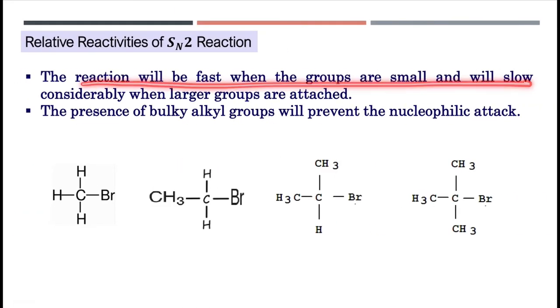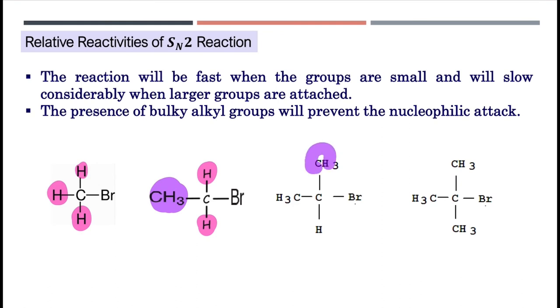This is because the reaction will be fast when the groups are small and will slow considerably when larger groups are attached. The presence of bulky alkyl groups will prevent the nucleophilic attack. Kalau macam yang ini, dia cuma ada small groups, methyl bromide. SN2 suka. Yang macam begini, dia cuma ada satu bulky group di situ. Masih lagi boleh.